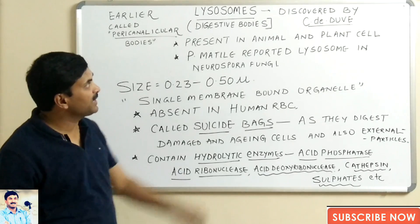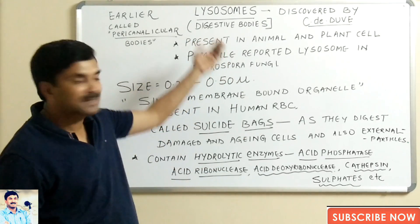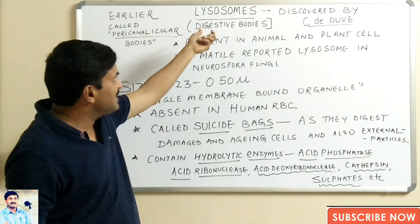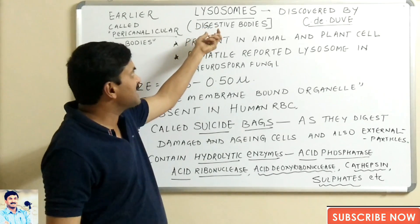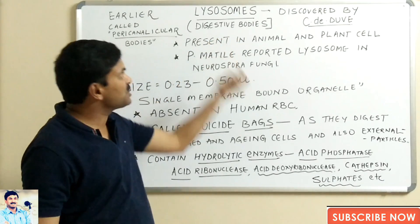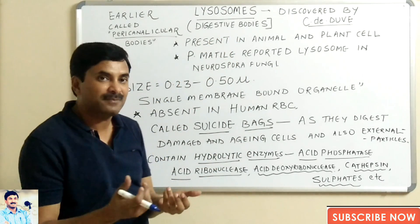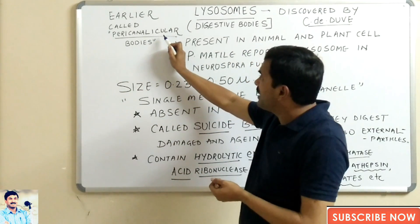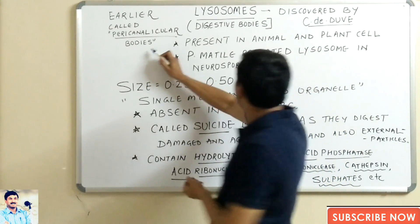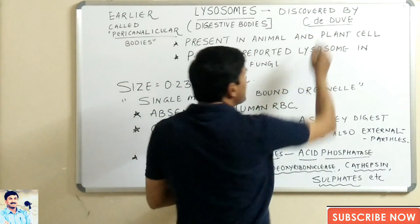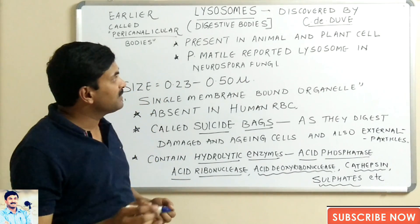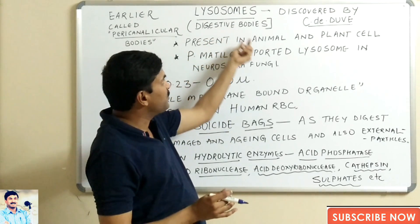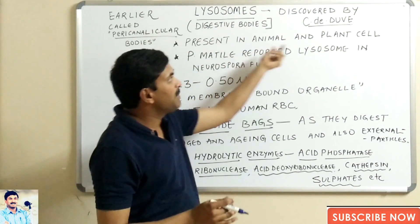Hello dear students, today we'll be discussing a cell organelle known as the lysosomes. These lysosomes are basically called digestive bodies because their chief role is digestion. They were earlier called pericanalicular bodies, but later a scientist known as C. Dubey discovered them in the liver cells.